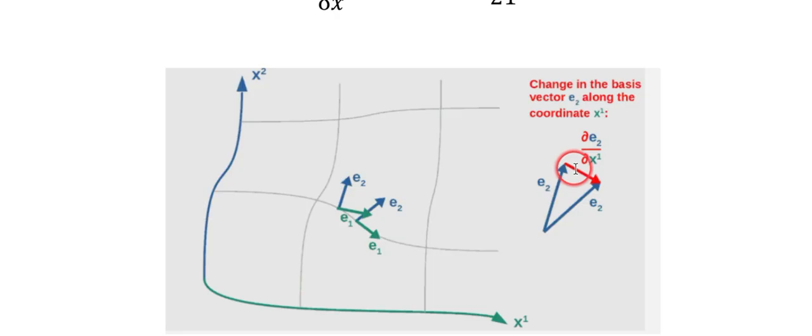And this vector here now, which it is a vector, that's in between these two, is the change in e_2 with respect to x^1. So we're moving along an x^1 coordinate line, and we're looking at the change in the e_2 basis vector.